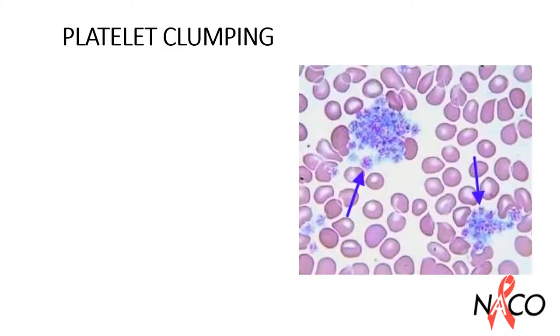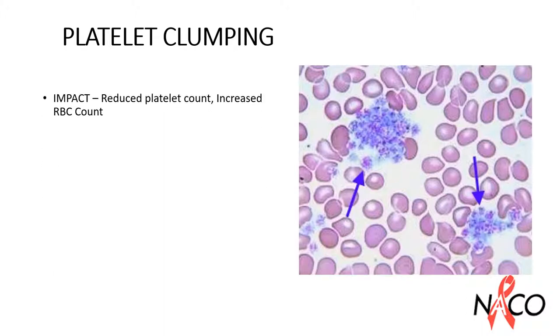Platelet clumping can impact results by causing a reduced platelet count and increased RBC count. The causes of platelet clumping are poor mixing and overfilling of additive tubes.